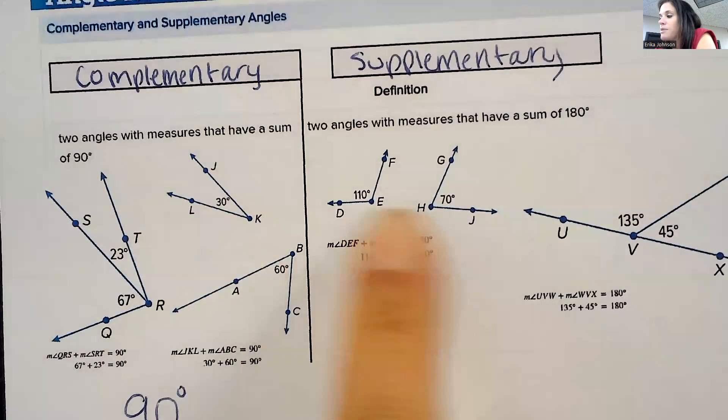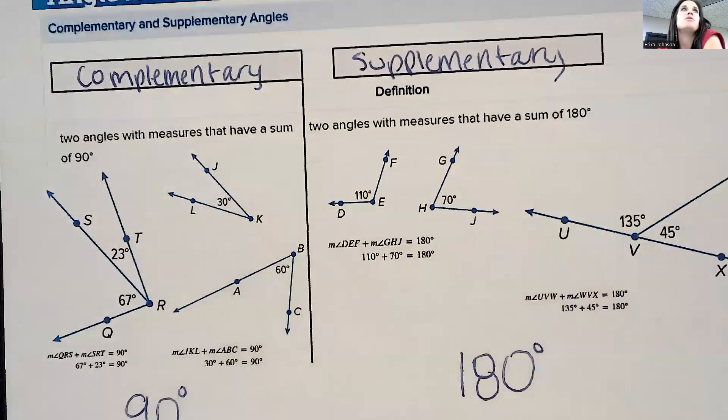These add up to 180 right next to each other or apart — they equal 180 degrees.